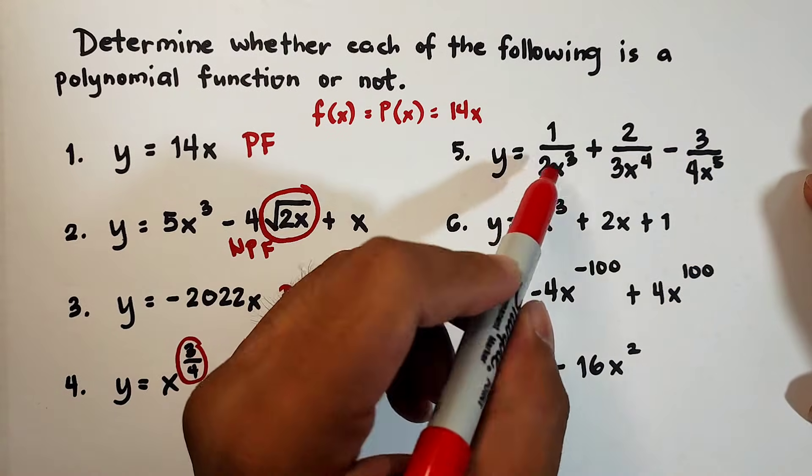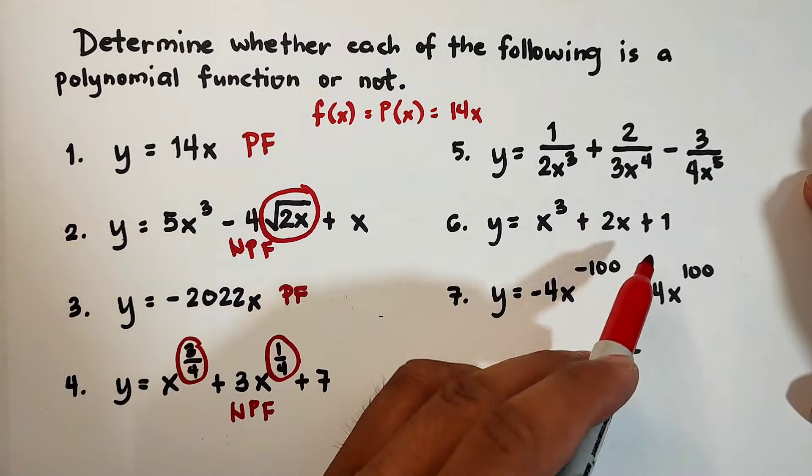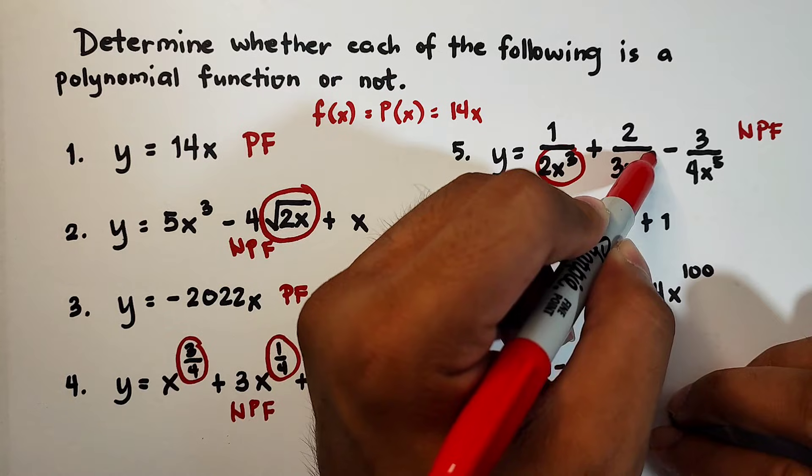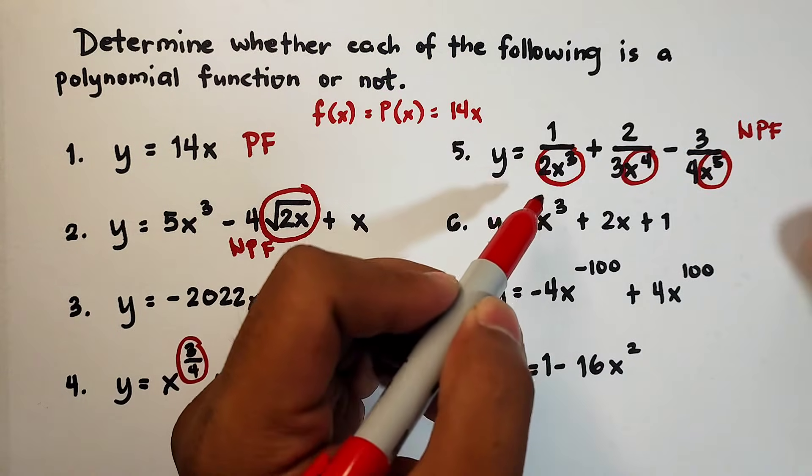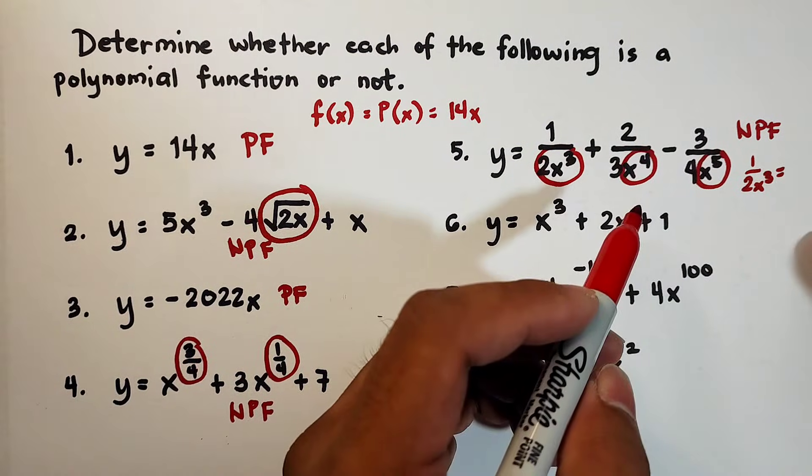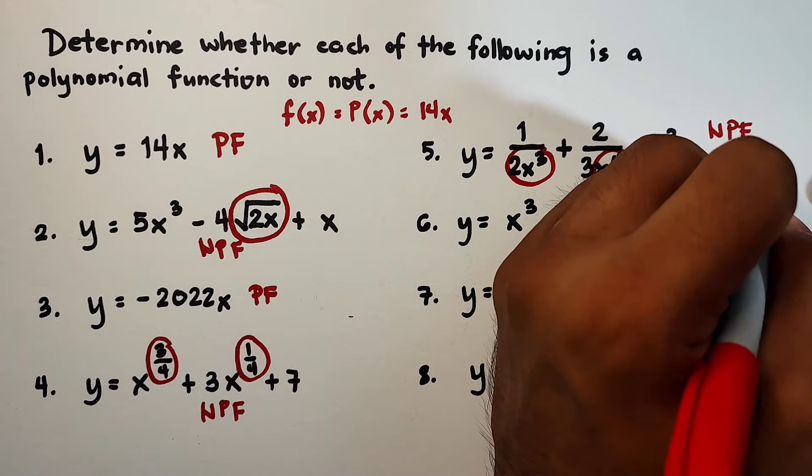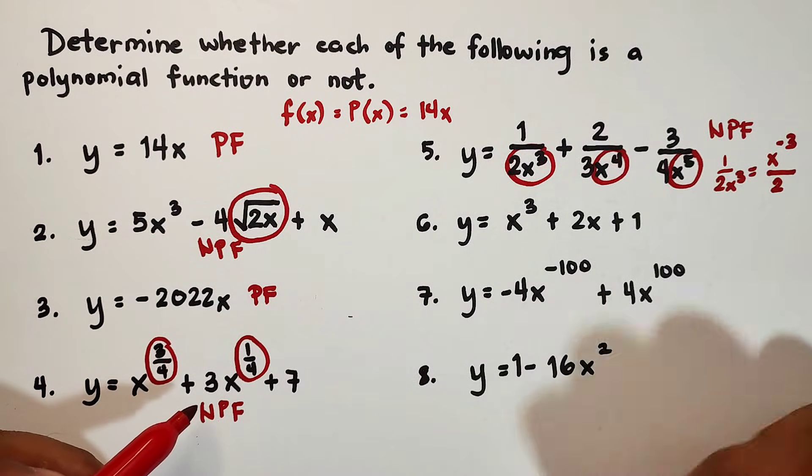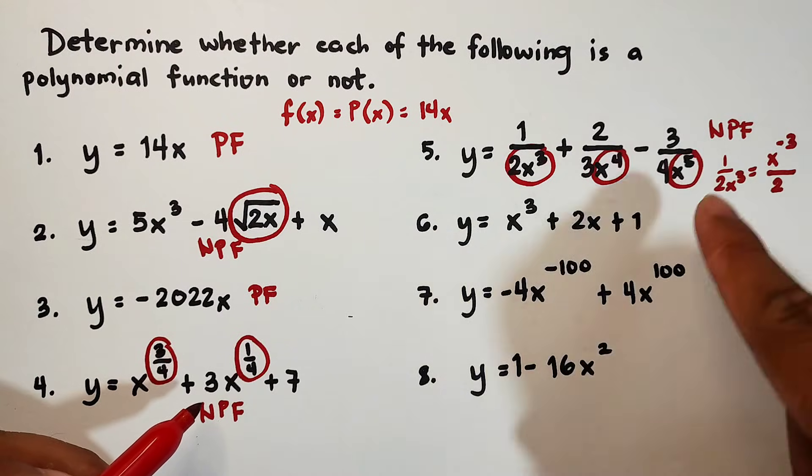Next, y is equal to 1 over 2x cubed plus 2 over 3x to the fourth power minus 3 over 4x to the fifth power. This one is not an example of polynomial function. We cannot have variables in the denominator because the tendency is you can rewrite this as 1 over 2x cubed. If we move the variable to the numerator, it will become x raised to negative 3 over 2. So the exponent will become negative. We cannot have variable in the denominator and we cannot have negative exponent.